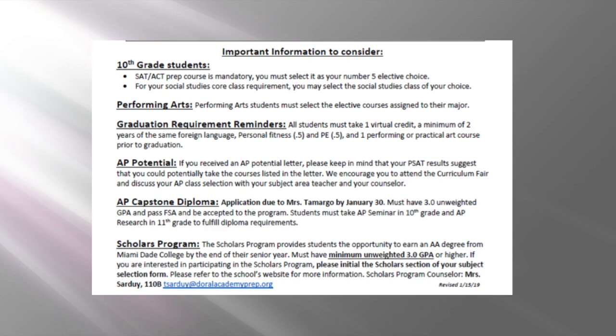For your social studies core class requirement, you may select the social studies class of your choice. Performing arts students must select the elective course assigned to their major. Graduation requirement reminders: all students must take one virtual credit, a minimum of two years of the same foreign language, personal fitness half a credit and PE half a credit, and one performing or practical art course prior to graduation.